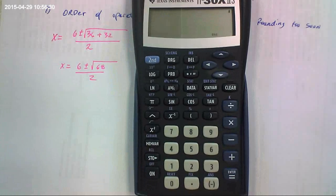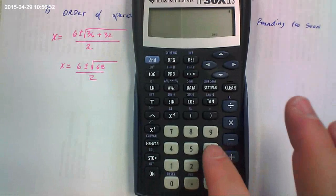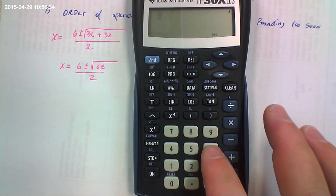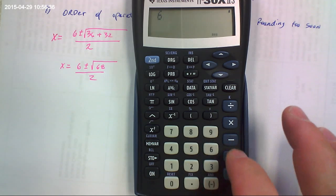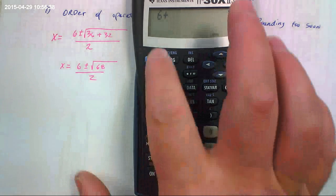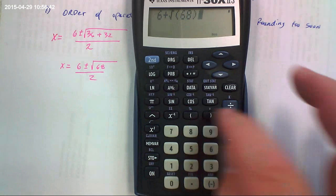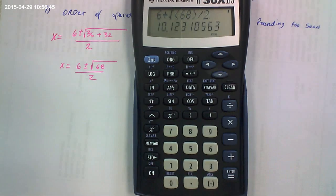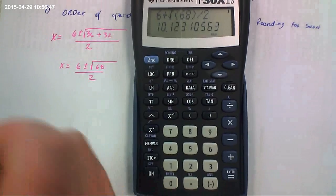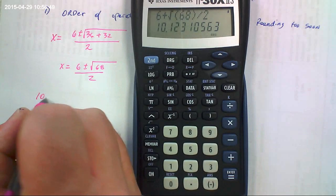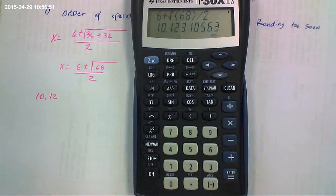I'm going to go ahead and enter it wrong. I'm going to enter it just like I would read it. So 6 plus the square root of 68 divided by 2. And this is incorrect. See? I get 10.12. And that's wrong.